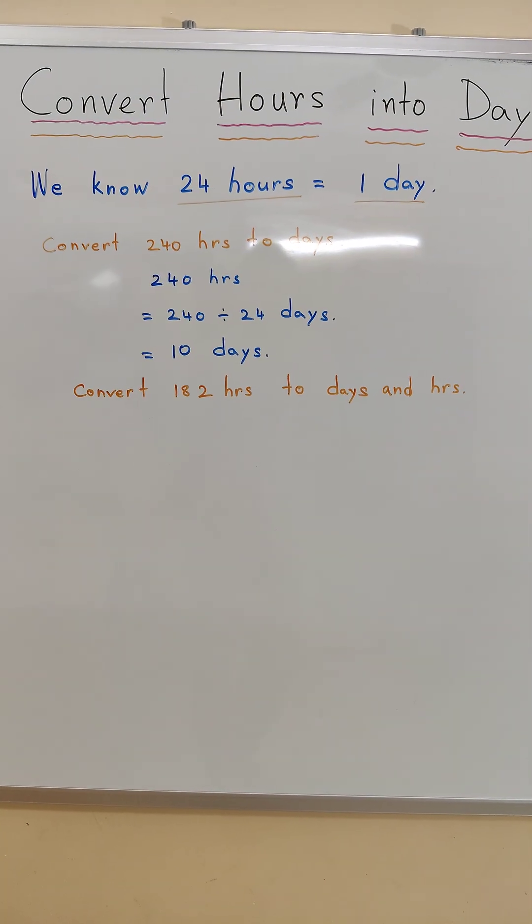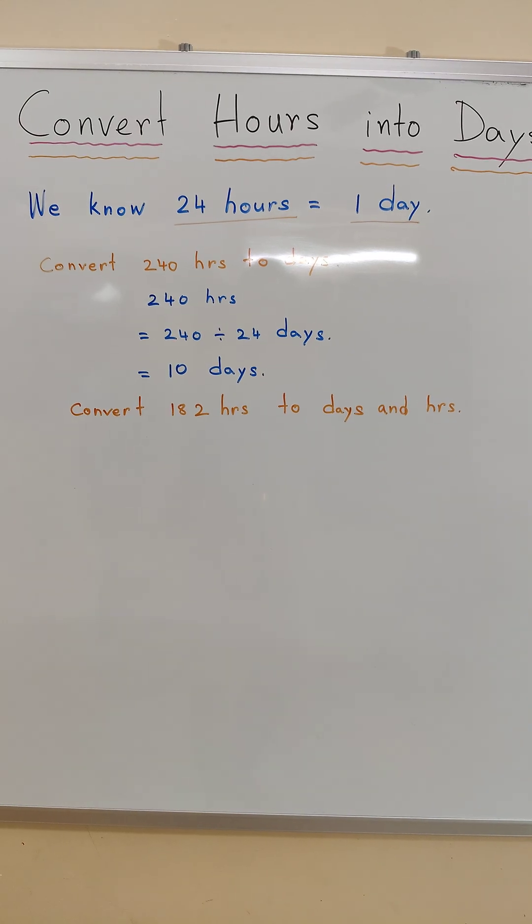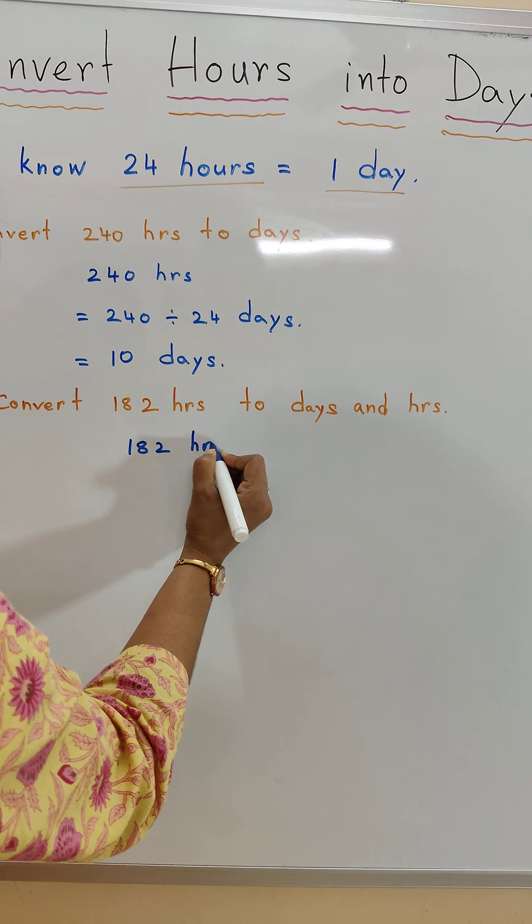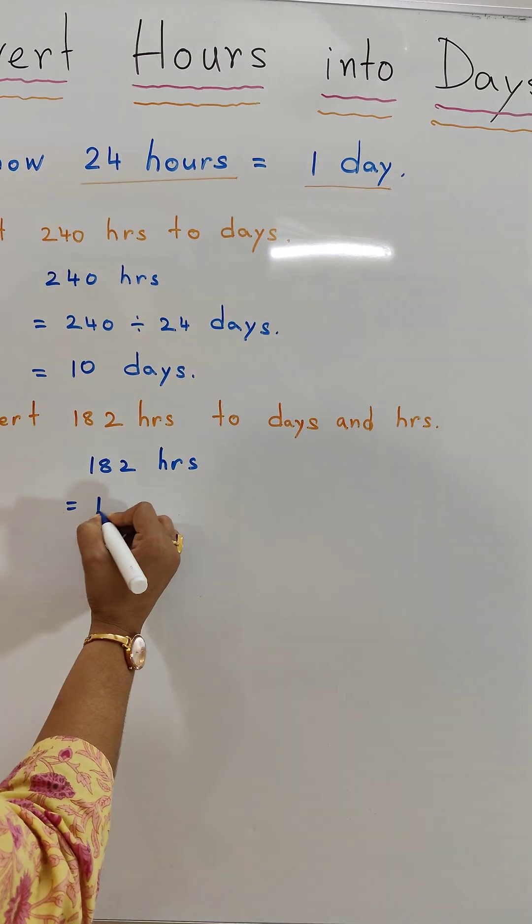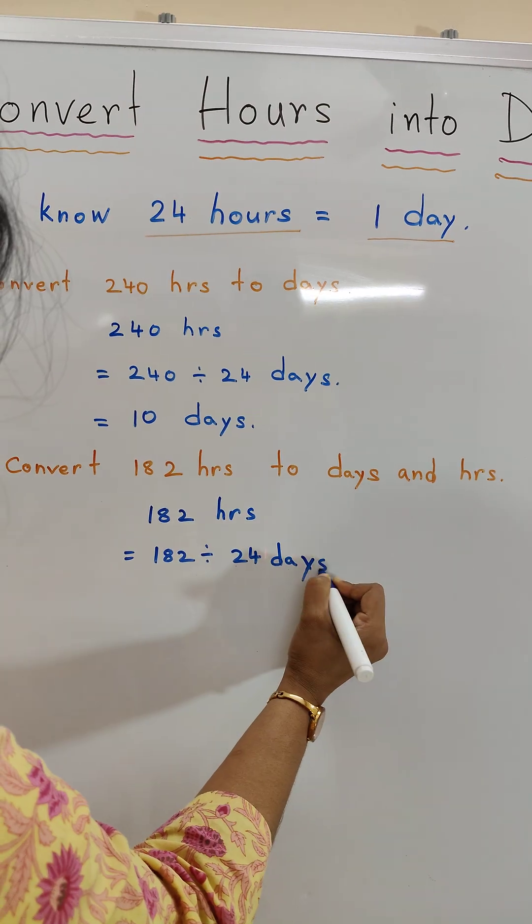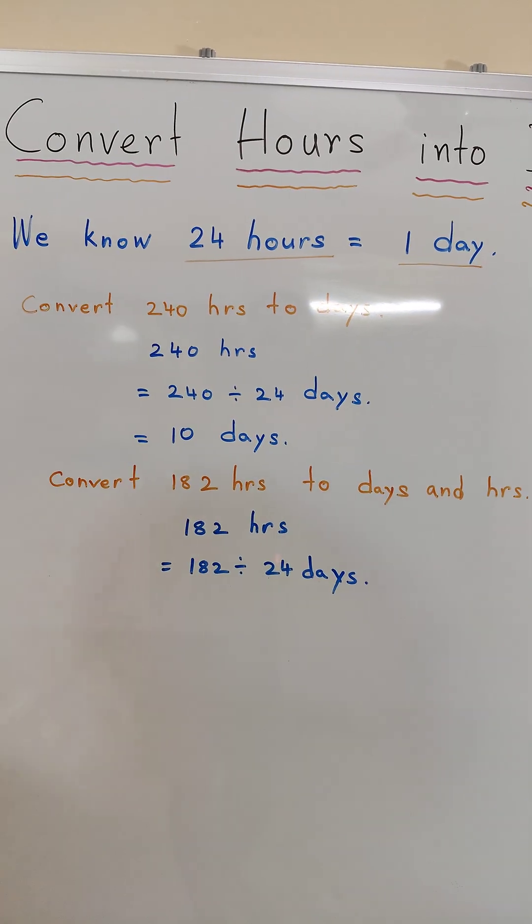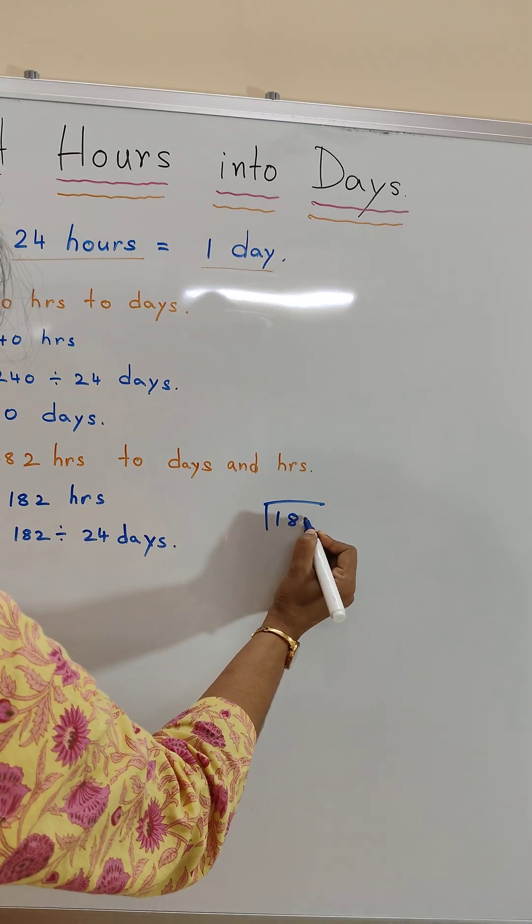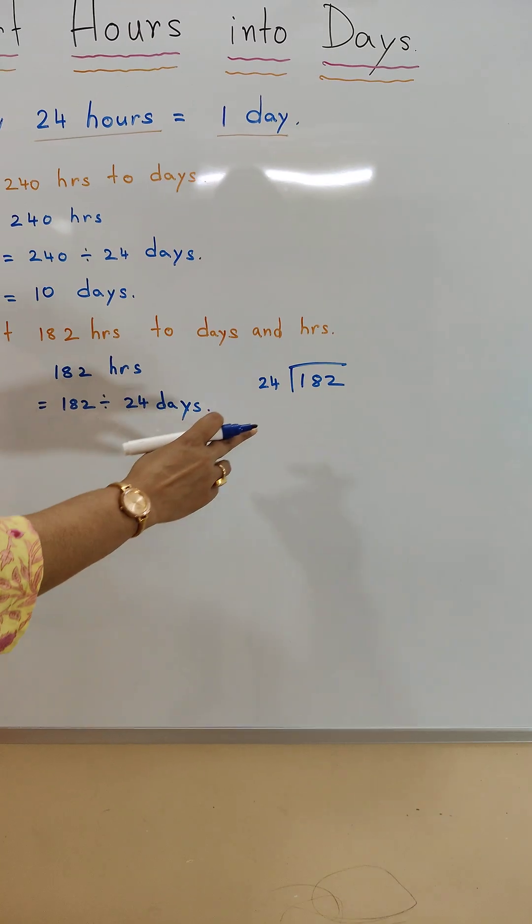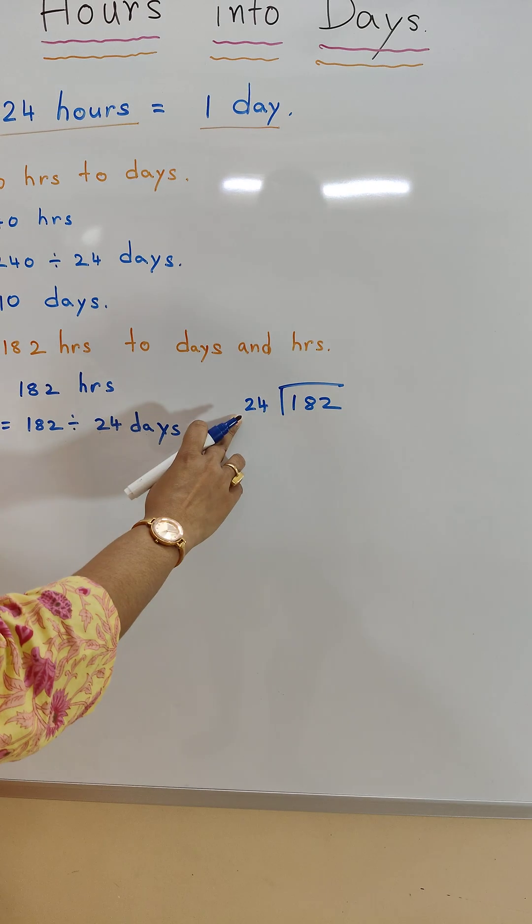We know 24 hours is equal to 1 day. So 182 hours is equal to 182 divided by 24 days. Now we will do the division: 182 divided by 24.